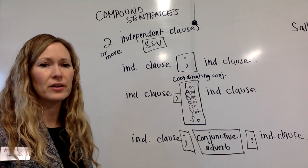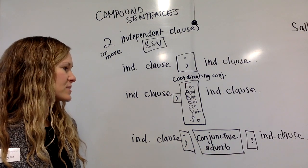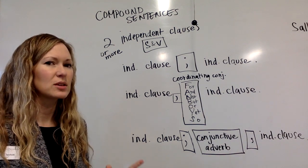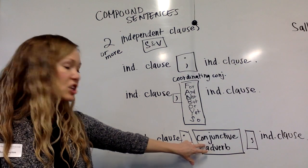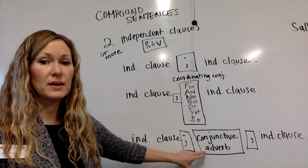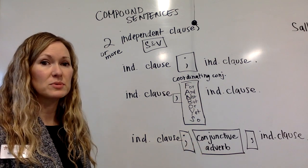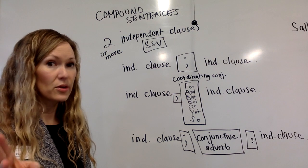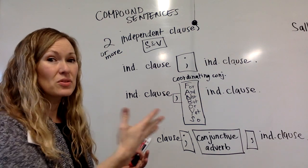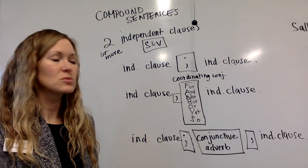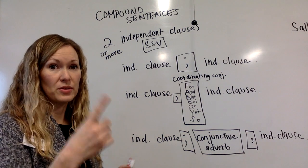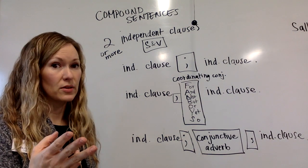Conjunctive adverbs are words like however, meanwhile, and consequently — those are the main ones you'll want to know. The thing about conjunctive adverbs is that they are not conjunctions; they will not be diagrammed on a dotted line. They will be acting just like adverbs, and adverbs modify verbs, adjectives, or another adverb. So when you put them on the diagram, it must coordinate with the independent clause it connects with, diagramming it with the verb, adjective, or another adverb.